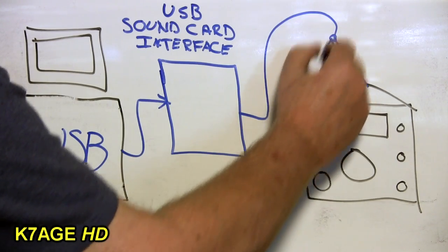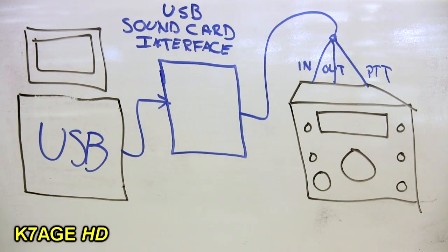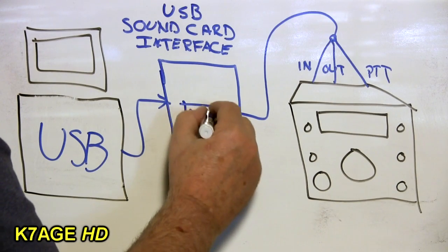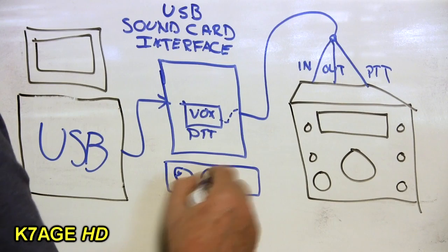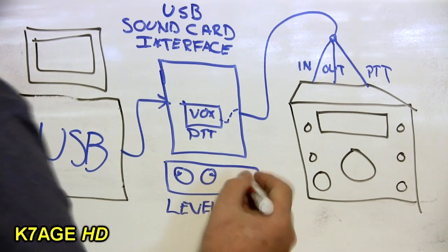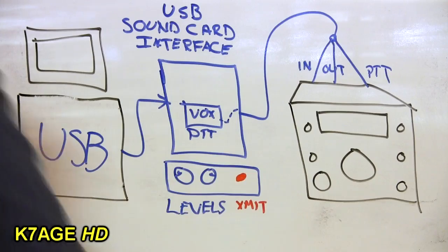You need to be careful about the applications that are running on your computer because if you have your mail program up and you get a mail message you do not want to have you've got mail going out on 20 meters. These boxes typically have audio level controls and LED status indicators on the front.